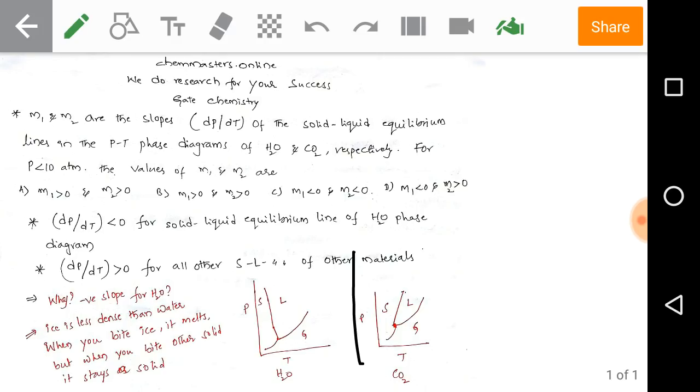Simple: when you bite ice, that means we are putting pressure on ice. When you bite ice it melts. But when you bite other solids it stays as a solid. So when we increase the pressure on the solid-liquid equilibrium line, it slowly increases into the liquid form. That means the volume of liquid increases, that's why the slope is going negative side in water.